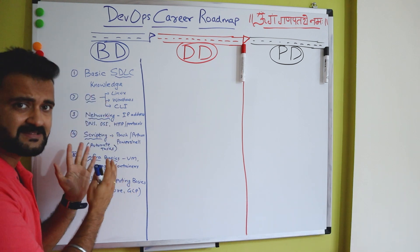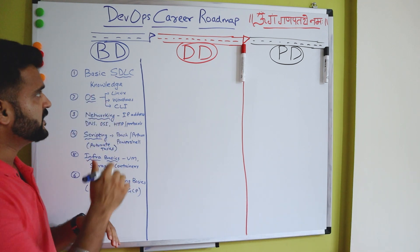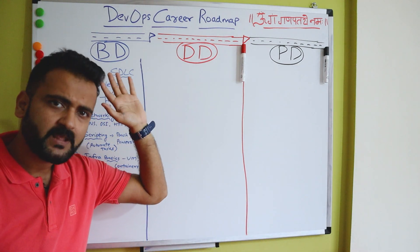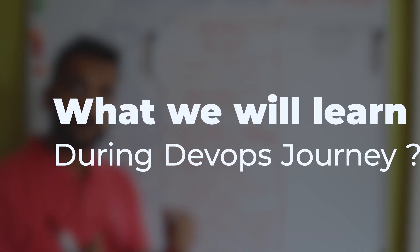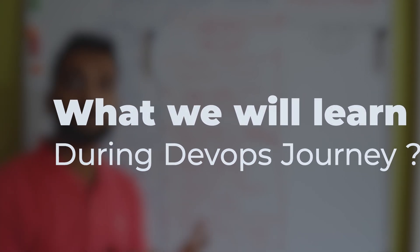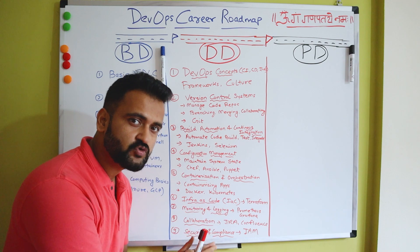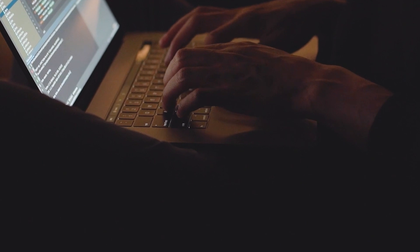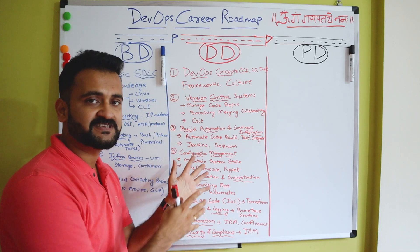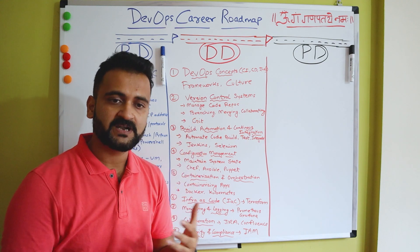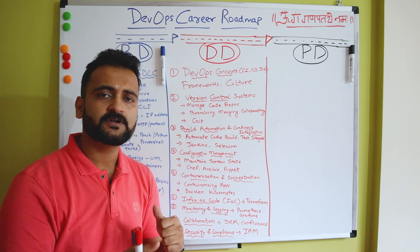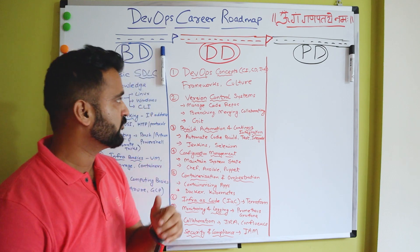If you are done with this and confident — and when I say confident, even a four or five out of ten is fine — don't wait, you are ready to move to the DD stage, which is During DevOps. Don't get overwhelmed, because DevOps is quite vast. You don't need to be a nine or ten out of ten expert in all of these things. You could have your own niche, but you need to know at least six or seven out of ten in most areas.